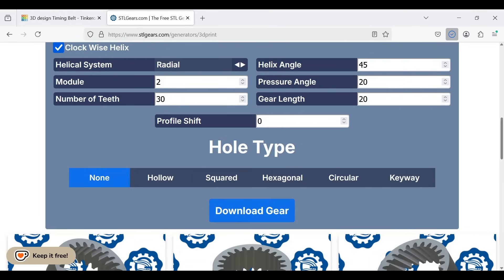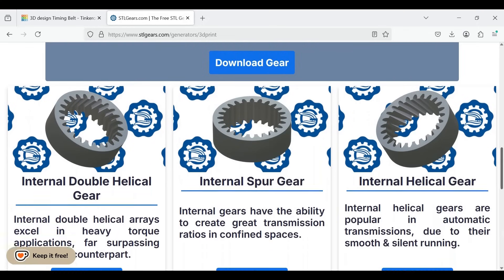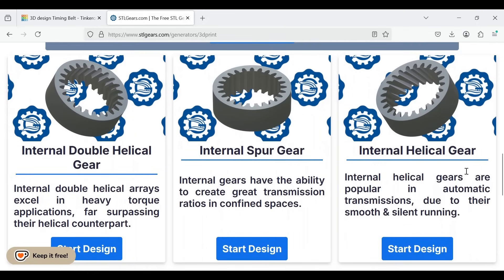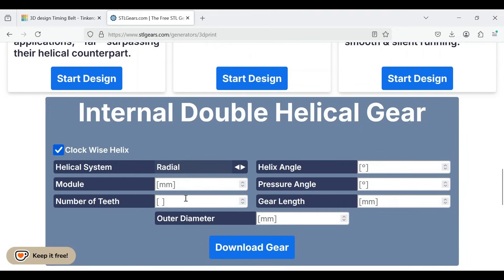It will download. We can change that now to make our planet, which is going to be 30, and then we can download the new gear. This is just ludicrously simple. Then we go down to the internal double helical gear ring. Click on start design. It'll pull up the screen. And remember, our module was two. Our angle was 45. The pressure angle was 20. The gear length was 20. And we want our number of teeth. In this case, our number of teeth is 80. And it'll give us an outside diameter.